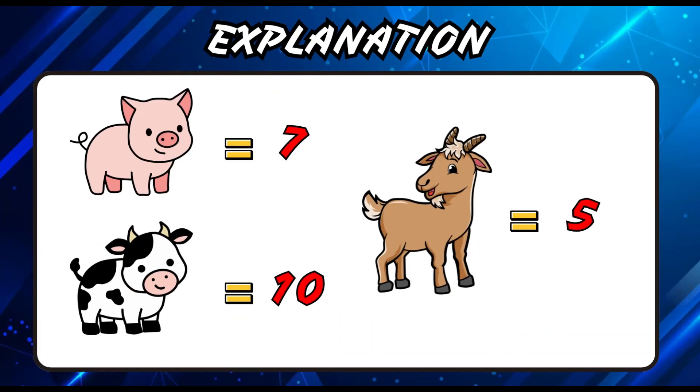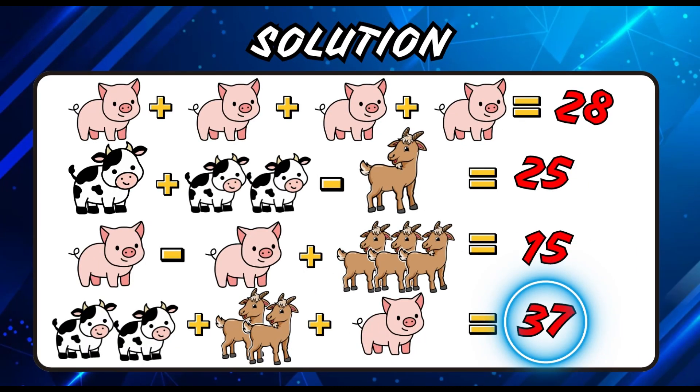Let me explain. The cow holds the value 10, the goat is 5, and the pig is 7. Yes, the right answer is 20 for cow plus 10 for goat plus 7 for pig equals 37.